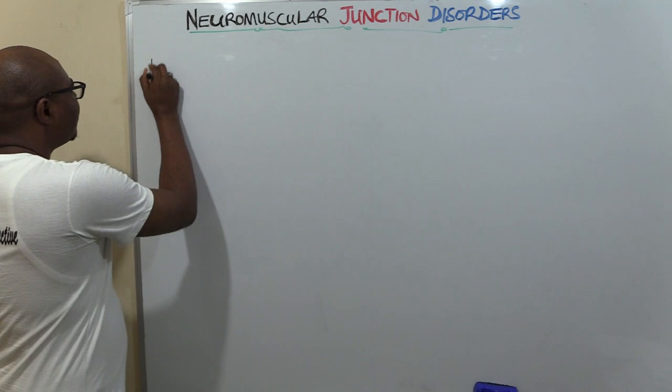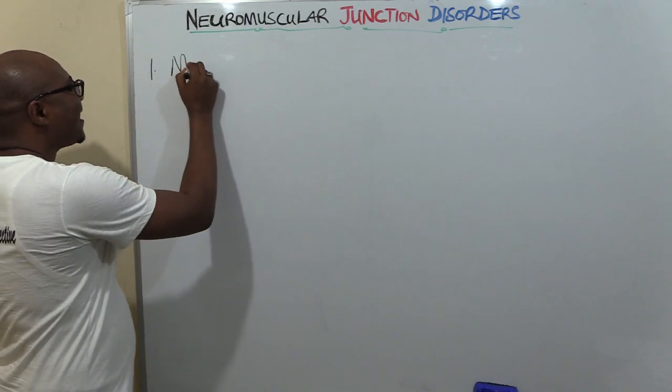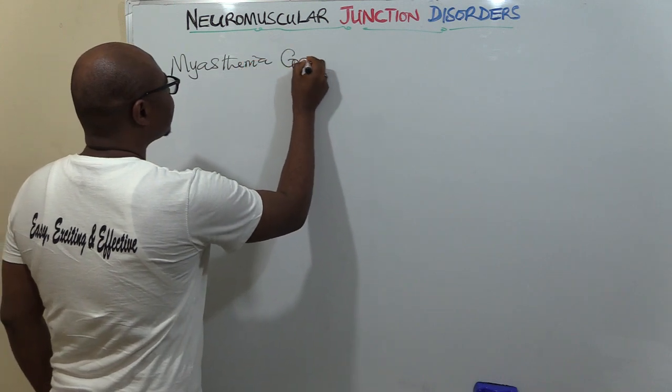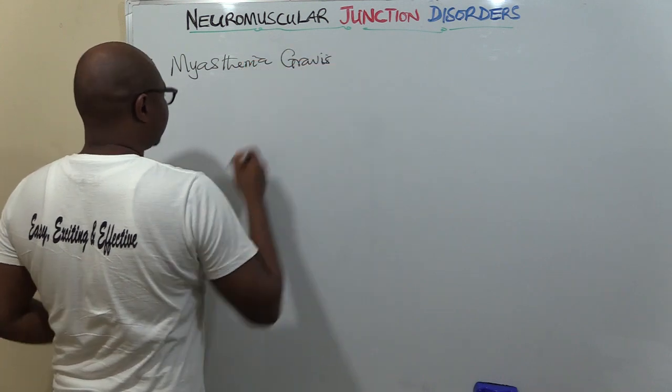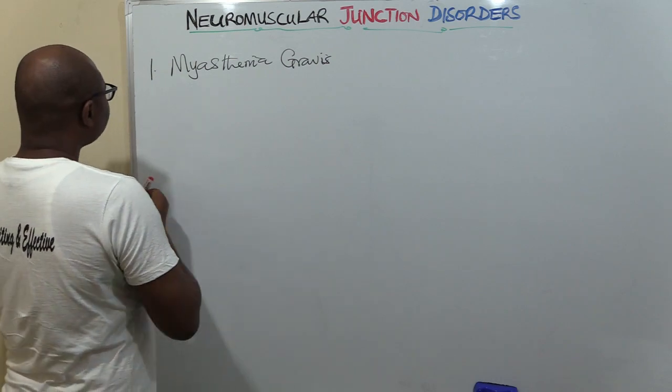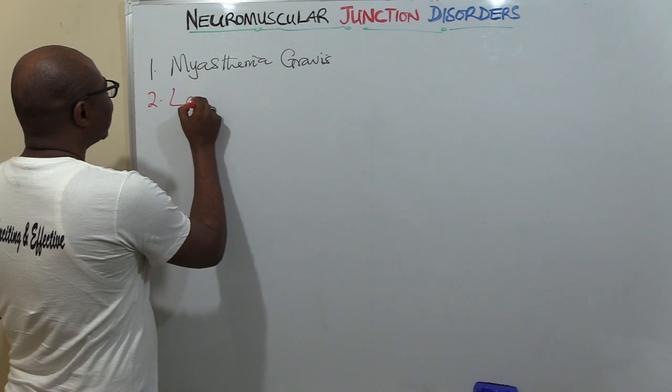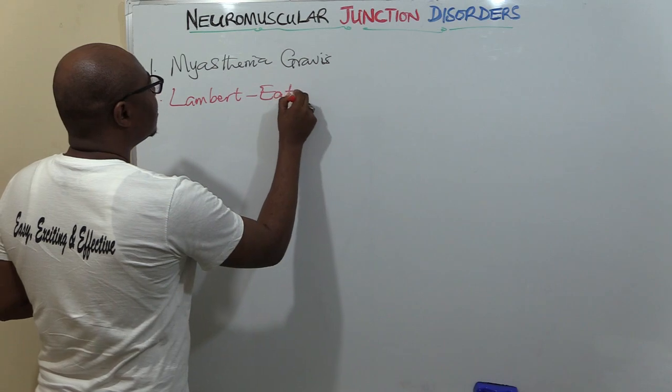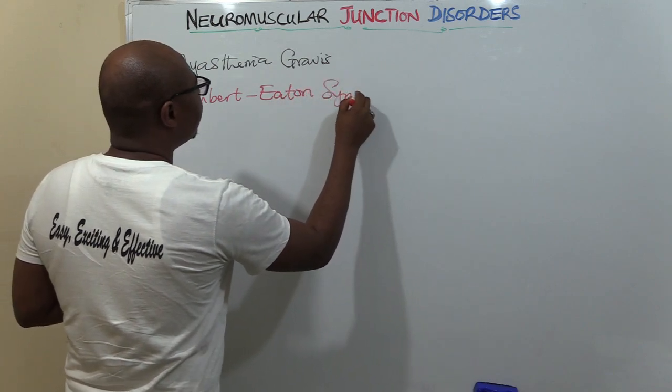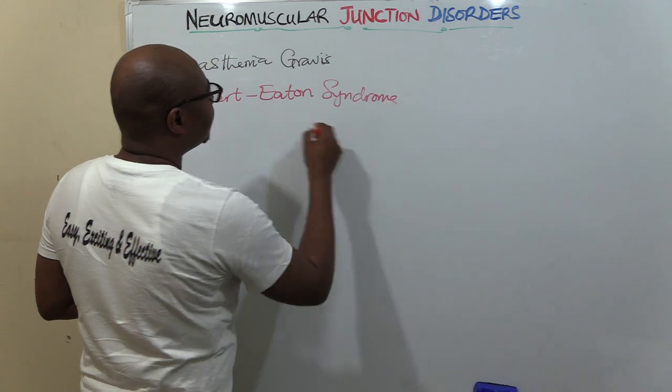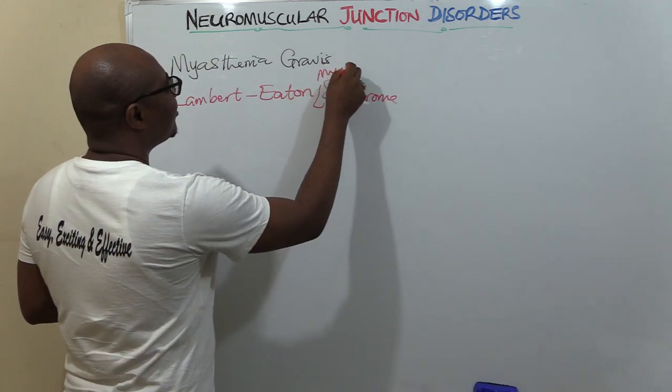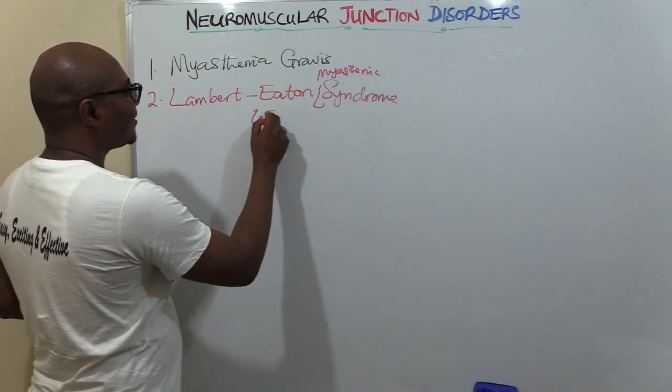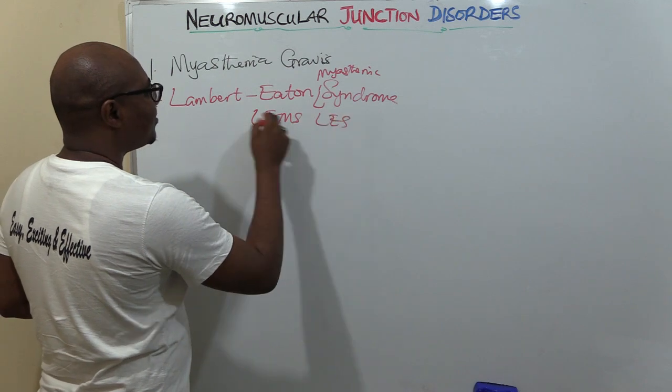These two disorders—one of them is called Myasthenia Gravis, and the other one is called Lambert-Eaton Syndrome.